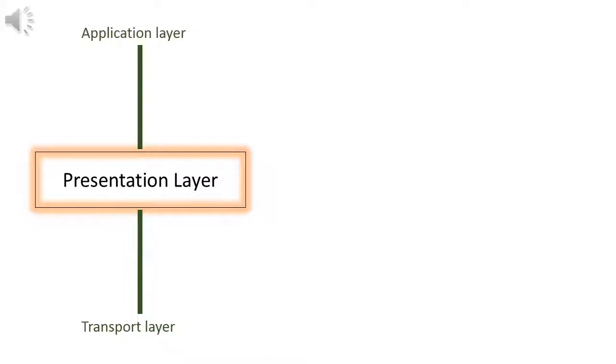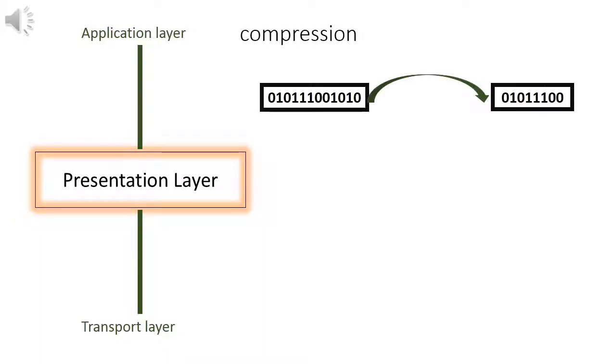Presentation layer does the work of compression. It compresses the data, meaning it reduces the number of bits or segments to be transmitted. After doing these functions, presentation layer passes the data to transport layer.